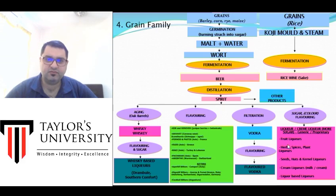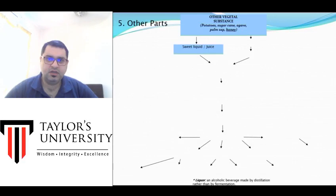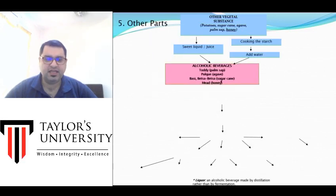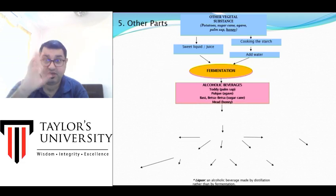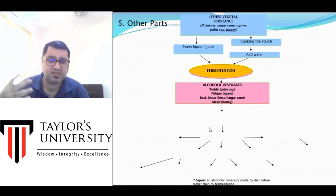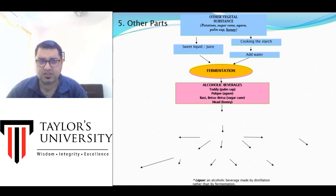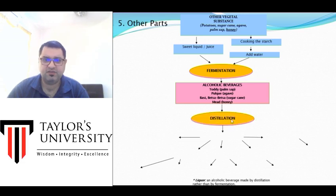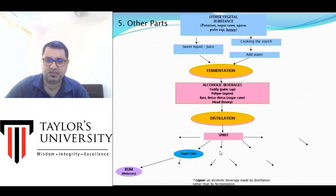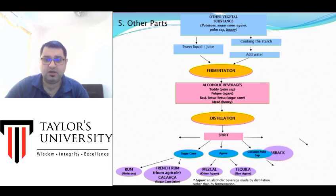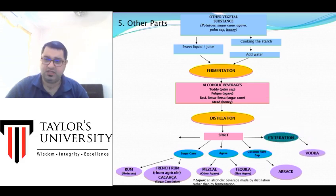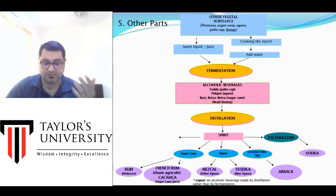Other fermentable sources include palm, agave plants, and sugarcane. Citrus fruits don't ferment well because of their high vitamin C and acidity. Sugarcane makes rum, agave makes mezcal or tequila, coconut makes arak (also called toddy). Vodka is essentially any spirit that has been filtered multiple times.